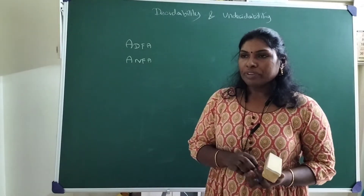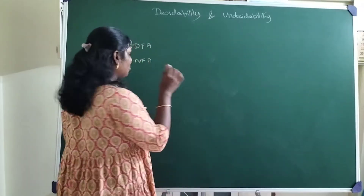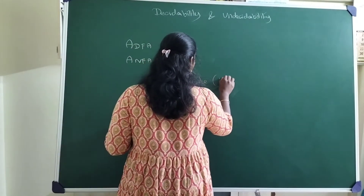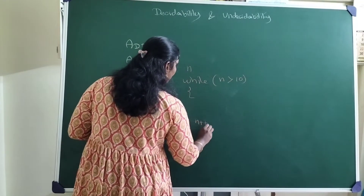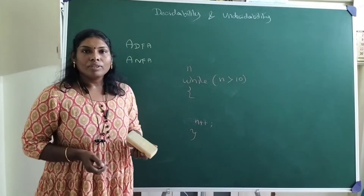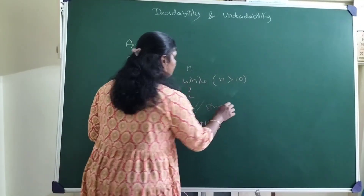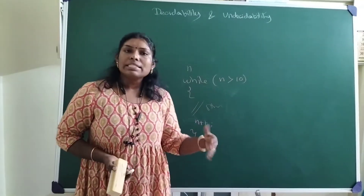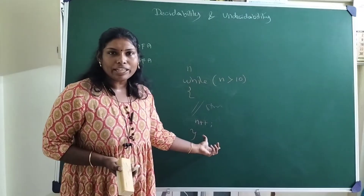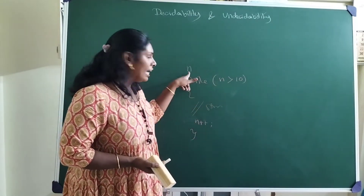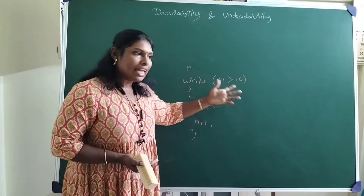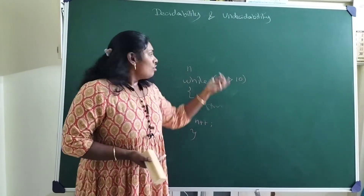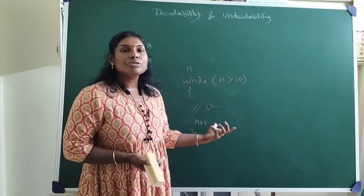Coming to the point of undecidability — consider an example from a programming language. I take one looping construct: I get a user-defined value of n and write a loop 'while n > 10'. At the end of the loop, I increment the value of n. You may have any number of statements in it. A compiler only checks syntactic structure, and there is no syntactic error here — the while statement, the value of n, the comparison, and the loop body are all syntactically valid, so the compiler will not throw an error.